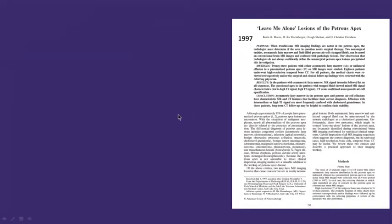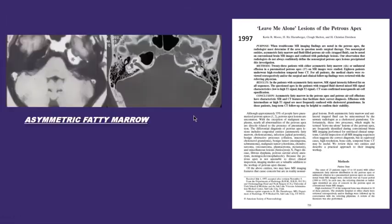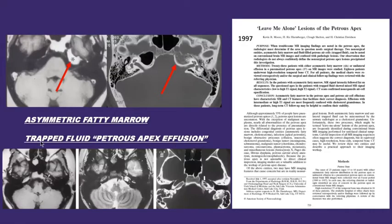Petrous apicitis is essentially a coalescent mastoiditis occurring in a patient with a pneumatized petrous apex. This is associated on MRI with irregular regional contrast enhancement and often leptomeningeal disease, manifest in this case by enhancement of the 7th and 8th cranial nerves. Very few patients actually have the classic Gradenigo triad. The group from Utah described leave-me-alone lesions of the petrous apex in 1997, most notably asymmetric fatty marrow and trapped fluid, the so-called petrous apex effusion.